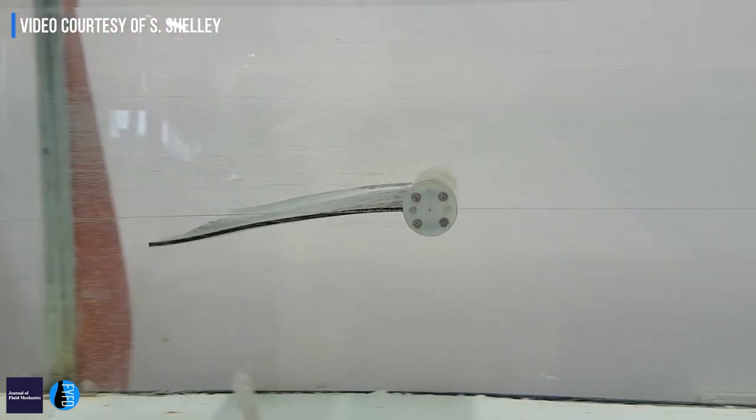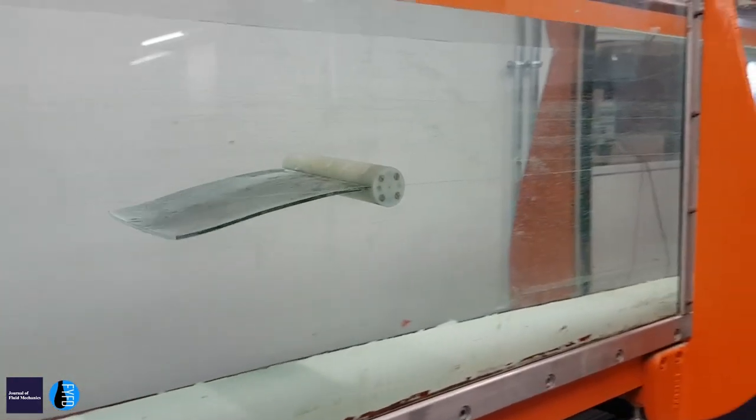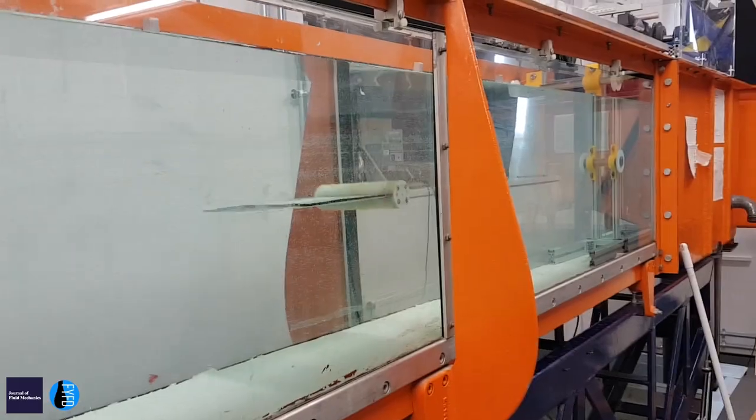If you were sat downstream of the object, if there was a normal wake, you'd see some oscillation in the flow that would be unsteady. Whereas if you could reduce that, you wouldn't necessarily, in the extreme case, know that the object was there, or you might assume that the object was smaller because the oscillations were less, so there's applications towards cloaking objects.